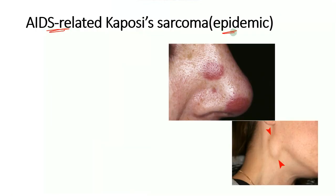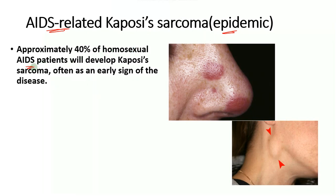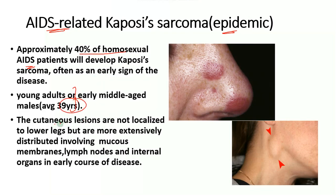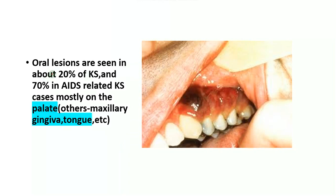The epidemic or AIDS-related Kaposi's sarcoma is one of the most common occurrences in AIDS patients. Approximately 40% of homosexual AIDS patients will develop Kaposi's sarcoma, often as an early sign of the disease. The average age is around 39 years. Cutaneous lesions are not only localized to the lower legs as in classic; they are also seen on the sides of the nose, involving the mucous membranes, lymph nodes, and internal organs early in the disease. Notably, oral lesions are quite common — about 20% of all Kaposi's sarcoma cases and about 70% of AIDS-related cases show oral lesions present on the palate, the gingiva, and the tongue.